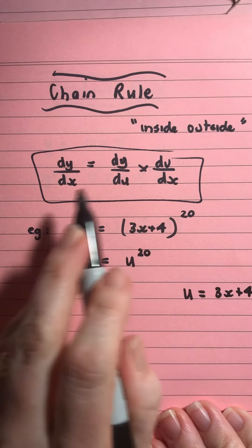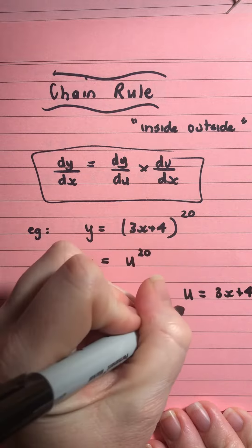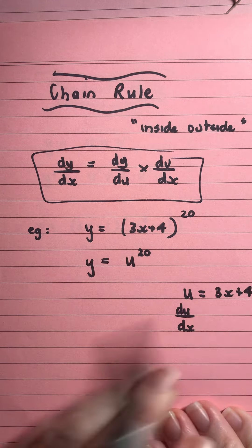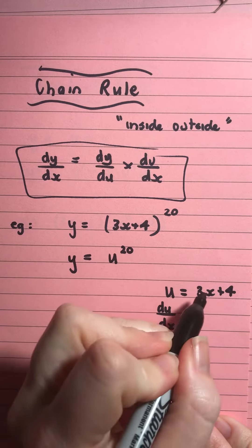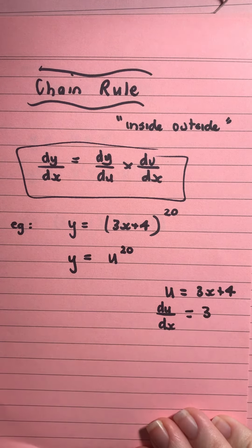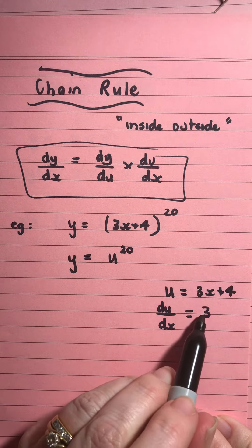I can then start using these pieces here. So, I can do du on dx and do the derivative of this function with respect to x. So, that means the derivative of 3x is going to be 3. The derivative of 4 is 0. So, my derivative here is 3.